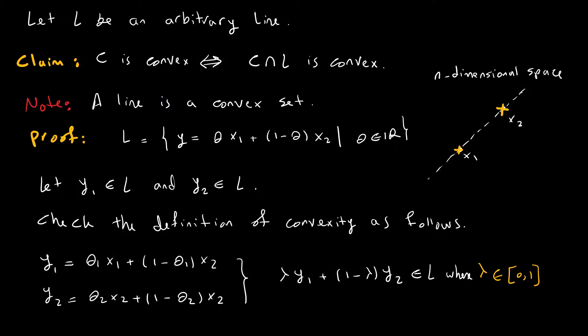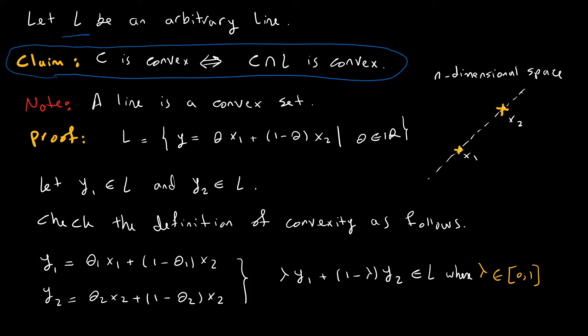First, let's start with an arbitrary line L to prove the claim. The claim in mathematical notation can be written as: C is convex if and only if C intersected with any line is convex. Now we need to observe a first fact: a line is a convex set. I'm going to use this fact, but before using it, I need to prove it.